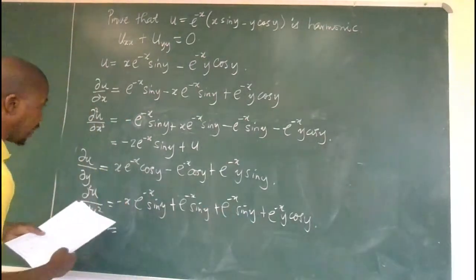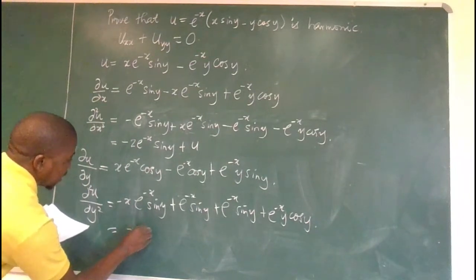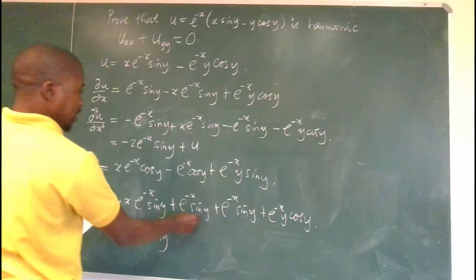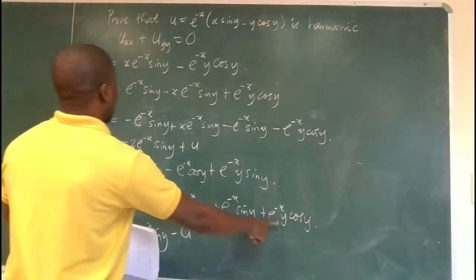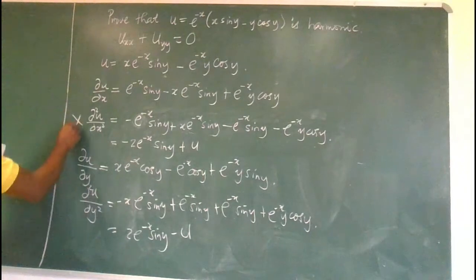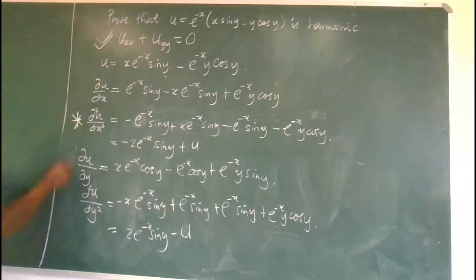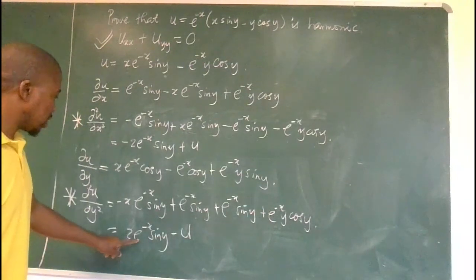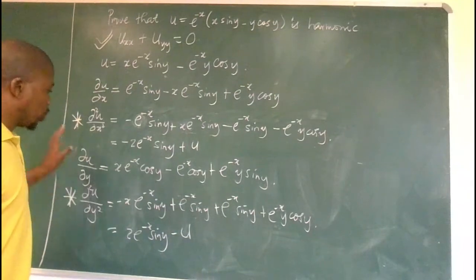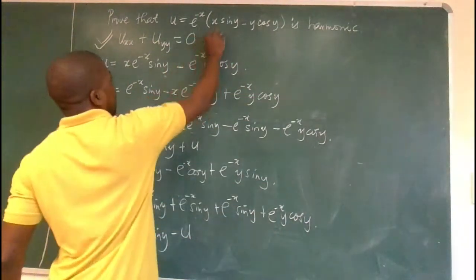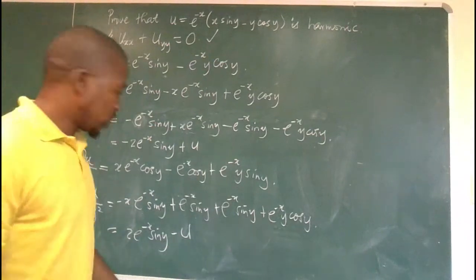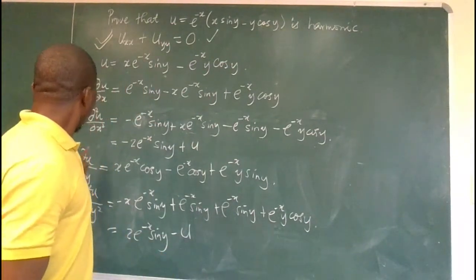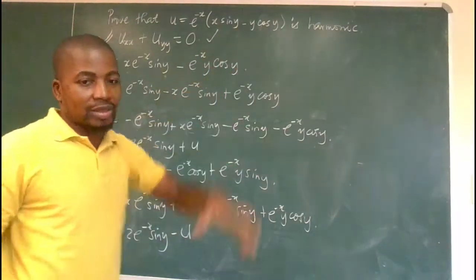Adding those two terms gives 2 e to the power minus x sin y. Then this and that is exactly negative u. Now adding the two second derivatives u_xx plus u_yy — these terms cancel each other out and the result is zero. Therefore it satisfies the Laplace equation, and the given u is harmonic. We conclude: since u_xx plus u_yy equals zero, u is harmonic.